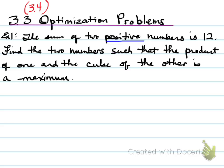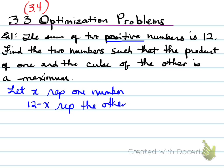So we can ignore any negative values. Now, the idea is we need to find a maximum. So, let's make a let statement. Let x represent one number and we let 12 minus x represent the other number. Why is that the case? Well, looking at the first statement up here, it says the sum of two positive numbers is 12. So, if one is x, then the other one is going to be 12 minus x. Because the sum of x plus 12 minus x is going to equal 12.